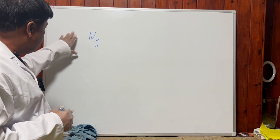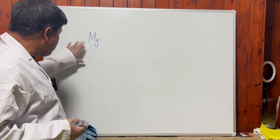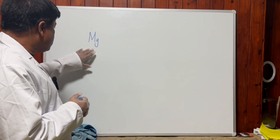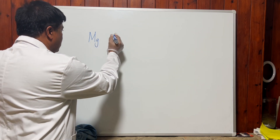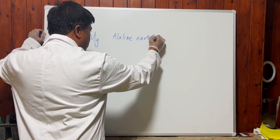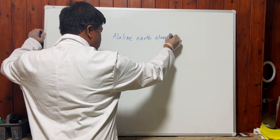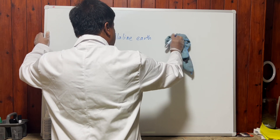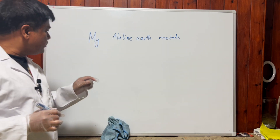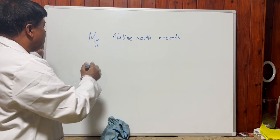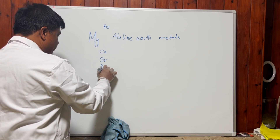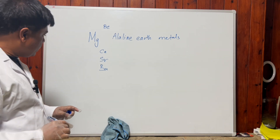I have already made a video on sodium. Now this time it's magnesium. Magnesium is present in group 2. Group 2 elements are also called alkaline earth metals or alkaline earth elements. They are available mostly in the Earth's crust. The group 2 elements are: beryllium, magnesium, calcium, strontium, barium, and radium.